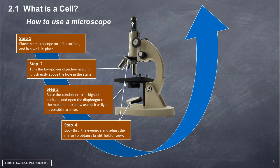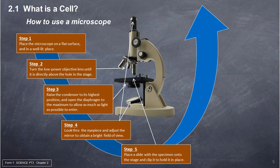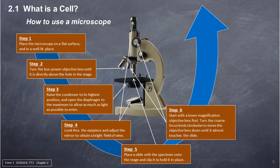Step 4: Look through the eyepiece and adjust the mirror to obtain a bright field of view. Step 5: Place a slide with the specimen onto the stage and clip it to hold it in place. Step 6: Start with the lower magnification objective lens first. Turn the coarse focus knob clockwise to move the objective lens down until it almost touches the slide.